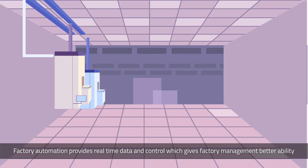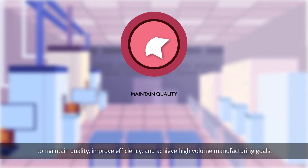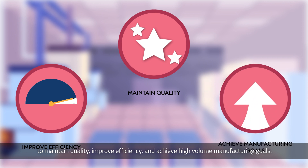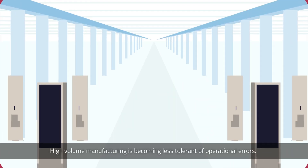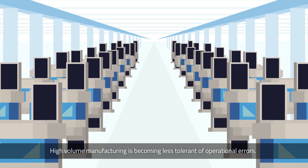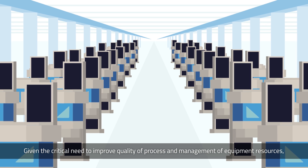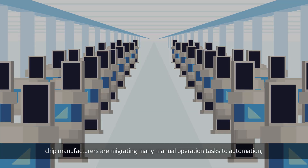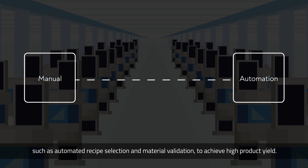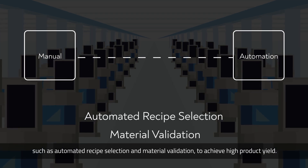Factory automation provides real-time data and control, which gives factory management better ability to maintain quality, improve efficiency, and achieve high-volume manufacturing goals. High-volume manufacturing is becoming less tolerant of operational errors. Given the critical need to improve quality of process and management of equipment resources, chip manufacturers are migrating many manual operation tasks to automation, such as automated recipe selection and material validation, to achieve high product yield.